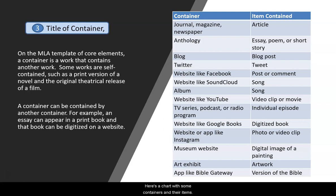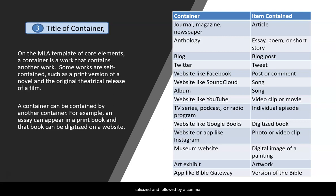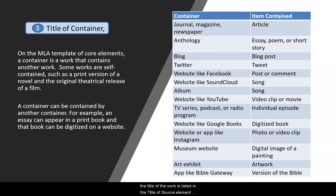Here's a chart with some containers and their items. The title of container is italicized and followed by a comma. In the case of a journal article, the title of container would be the journal name, italicized and followed by a comma. Some works are self-contained, such as a print version of a novel and the original theatrical release of a film. In that case, the title of the work is listed in the title of source element, and the title of container element is left blank, but any relevant publication details are provided in the container section of the template.